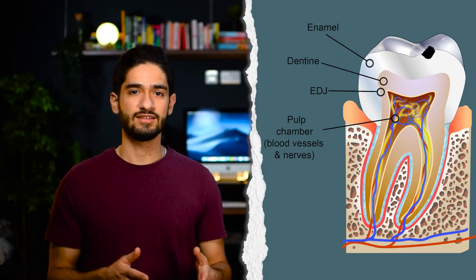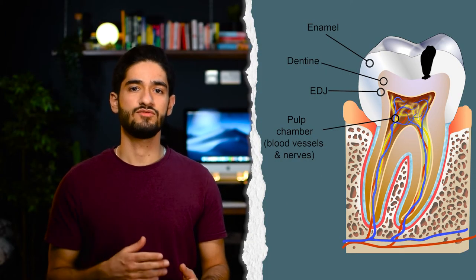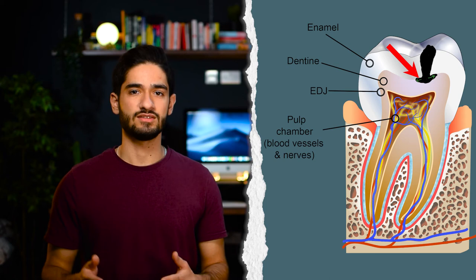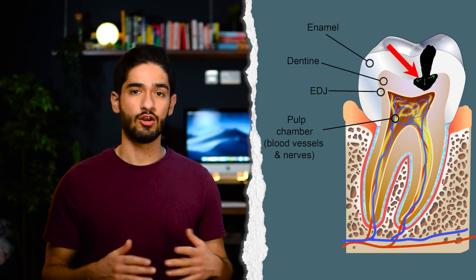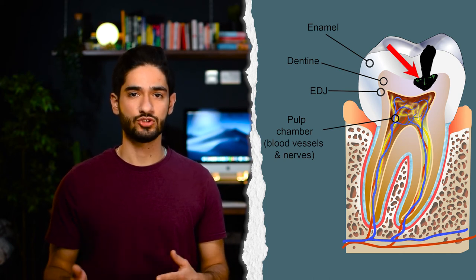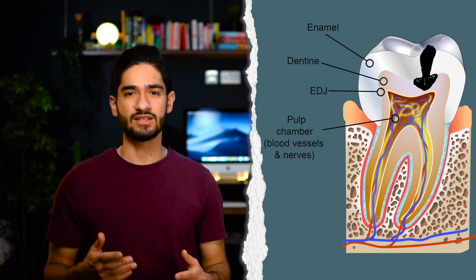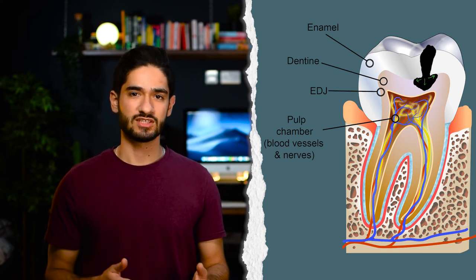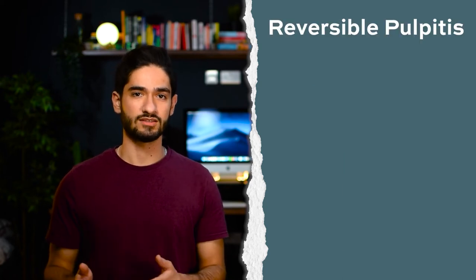Caries progresses into dentine without much lateral spread, but once it reaches the enamel-dentine junction it can spread laterally along this junction and down the dentinal tubules towards the pulp. This is where the patient may start experiencing some symptoms of what we call reversible pulpitis.